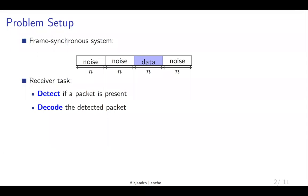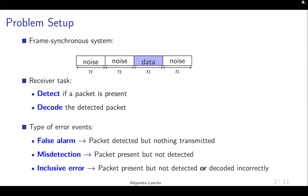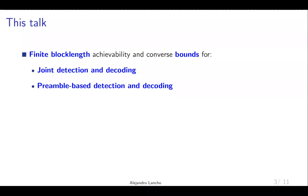The considered problem setup is the following. We consider a frame-synchronous system as the one we have in the figure, where time is divided in frames of length n. The receiver's task is to decide whether a frame contains noise or a data packet, and if it contains a data packet, to decode it. Within this setup, three types of error events are possible: false alarm, that is when a packet is detected but nothing was transmitted; misdetection, when a packet is present but not detected; and inclusive error, when a packet is present but not detected, or it is detected but incorrectly decoded. We will present finite blocklength achievability and converse bounds for joint detection and decoding, when detection is also performed over the data, and for preamble-based detection and decoding, where detection is performed over a dedicated preamble inside the packets.